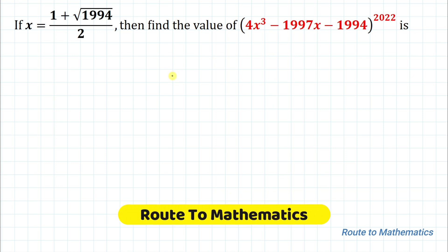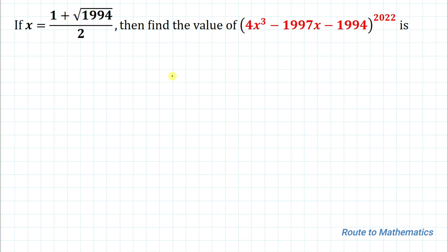Hello everyone, welcome to Root 2 Mathematics. In this video we are going to solve this interesting olympiad question. The given question is: if x equals 1 plus root under 1994, divided by 2, then find the value of 4x³ minus 1997x minus 1994, whole to the power 2022.